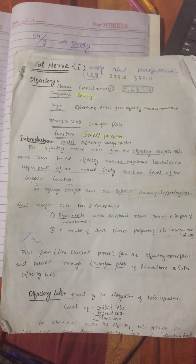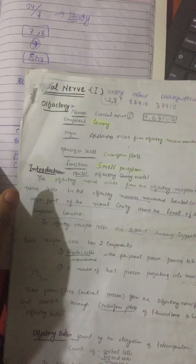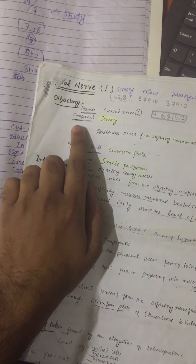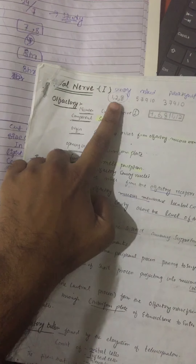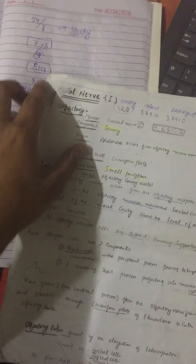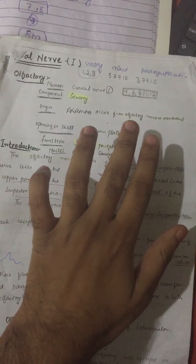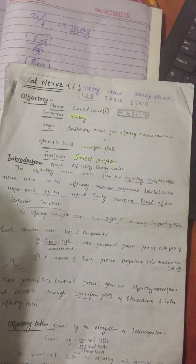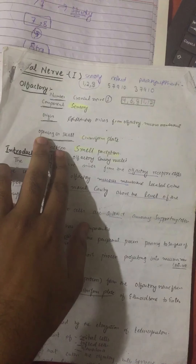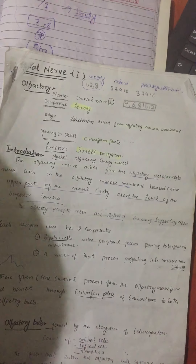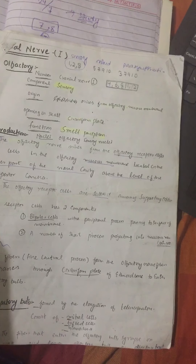Today we are going to cover the olfactory nerve, the first cranial nerve. It is a sensory nerve, similar to the second cranial nerve, the optic nerve, and the eighth cranial nerve, the vestibulocochlear nerve, which is also a sensory nerve. The olfactory nerve originates from the olfactory mucous membrane in the nose, passes through the cribriform plate, and its main function is olfaction.